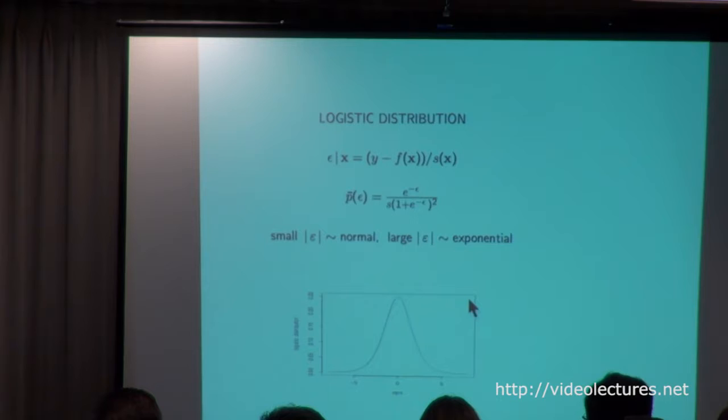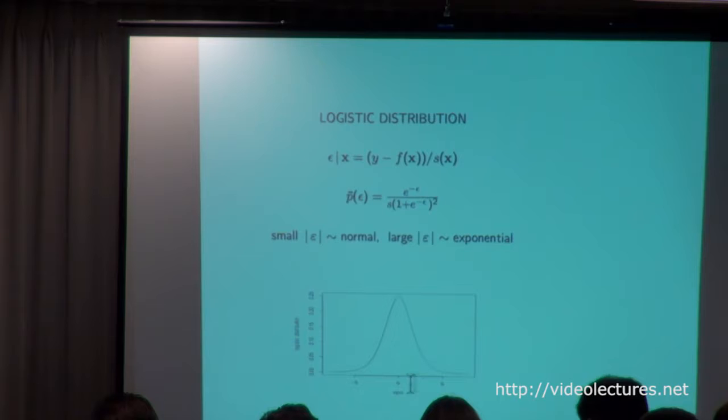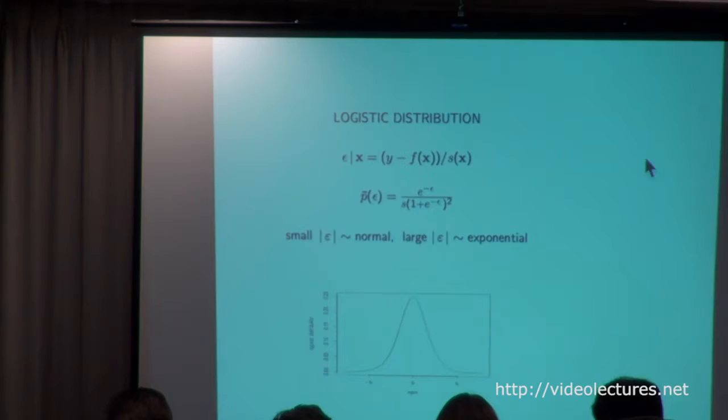Here's the logistic distribution. Its property conforms to what you might call Tukey's razor: in this distribution, the small errors are normal, but the large errors have an exponential distribution, which is a pretty long-tailed distribution. We would hope this distribution works well for a wide variety of real error distributions — none of which will ever be exactly logistic or exactly anything. So we're going to use the logistic distribution for all of the procedures I'll discuss.